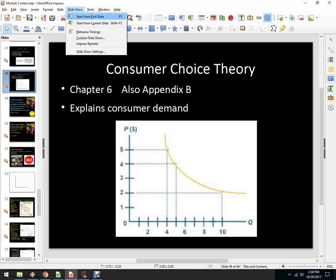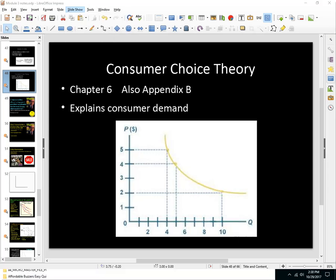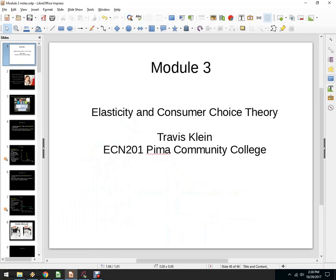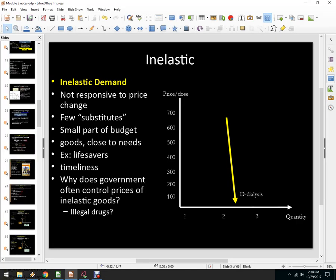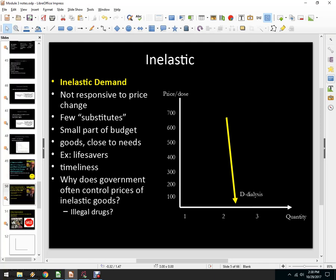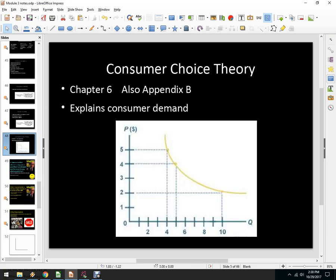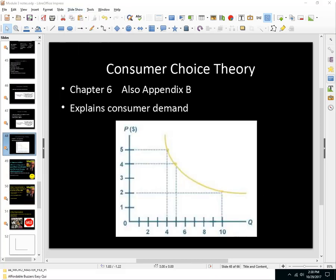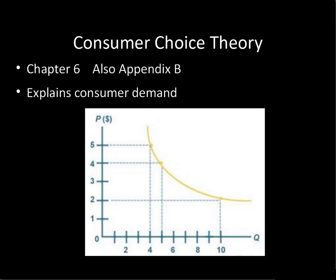Hello. In this video, let's go over something called consumer choice theory. Consumer choice theory is one of the more challenging topics in microeconomics. Students generally benefit from multiple explanations of this, so I recommend reading chapter 6 and appendix B if you're into the more mathematical explanations for what's going on.